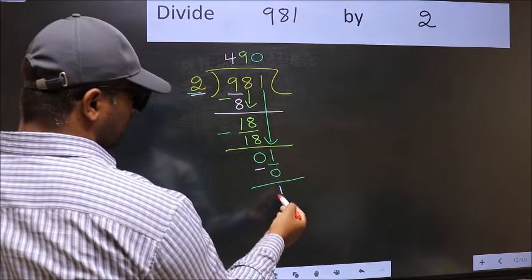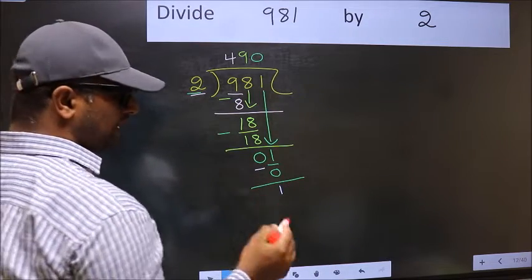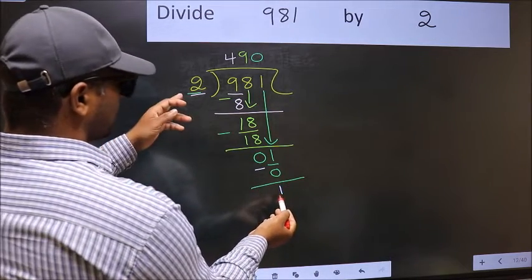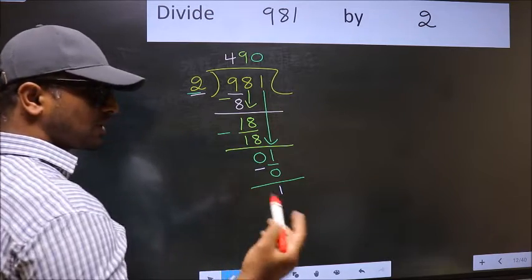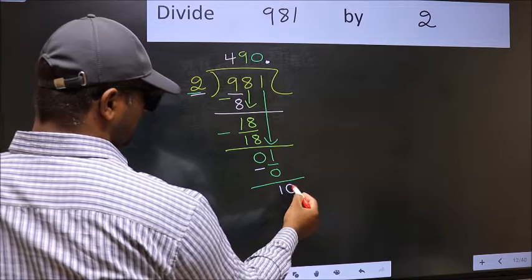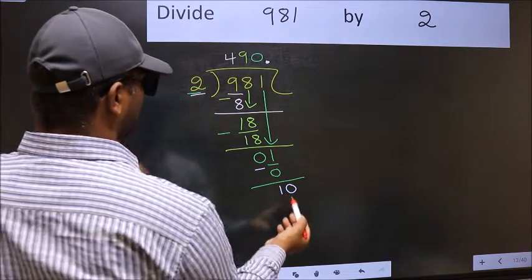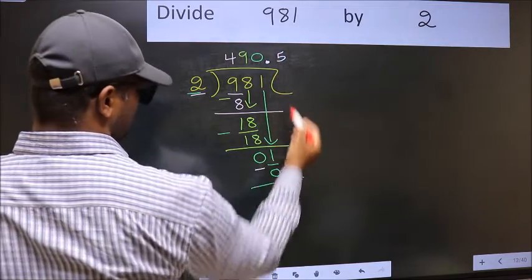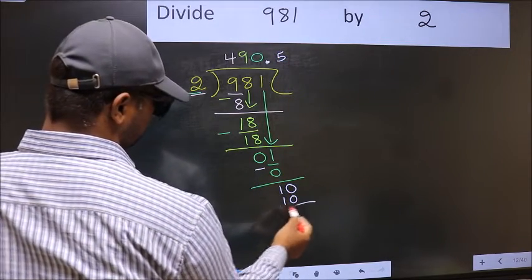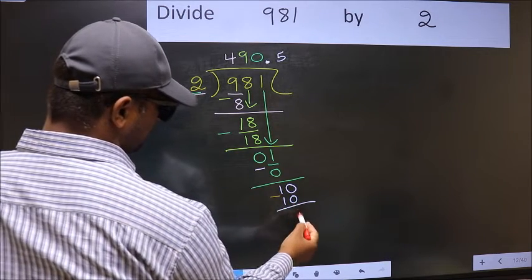Over here, we did not bring any number down. And 1 is smaller than 2. So now you can put a dot and take 0. So 10. When do we get 10 in 2 table? 2 fives, 10. Now you should subtract 10 minus 10, 0.